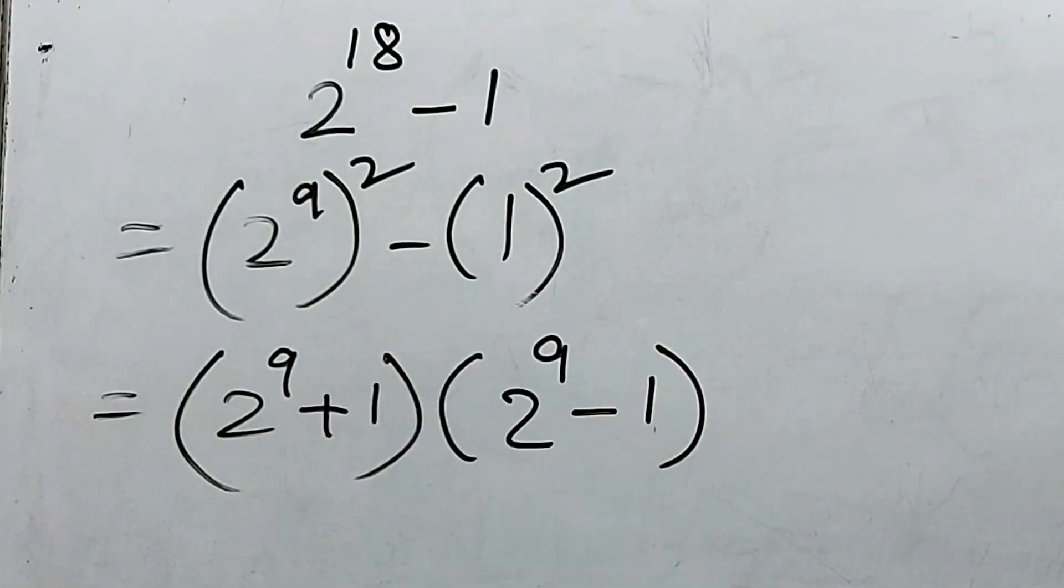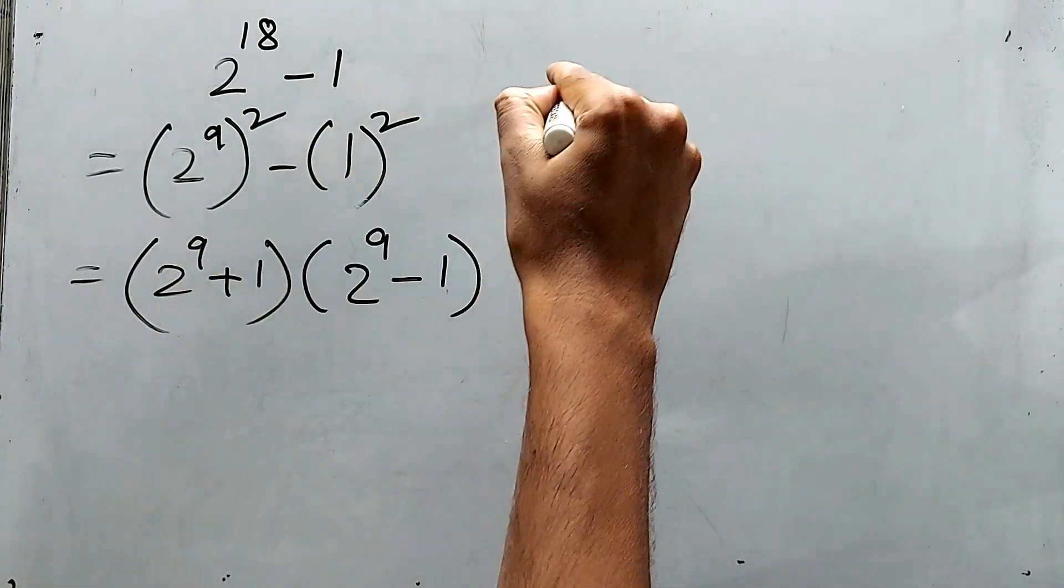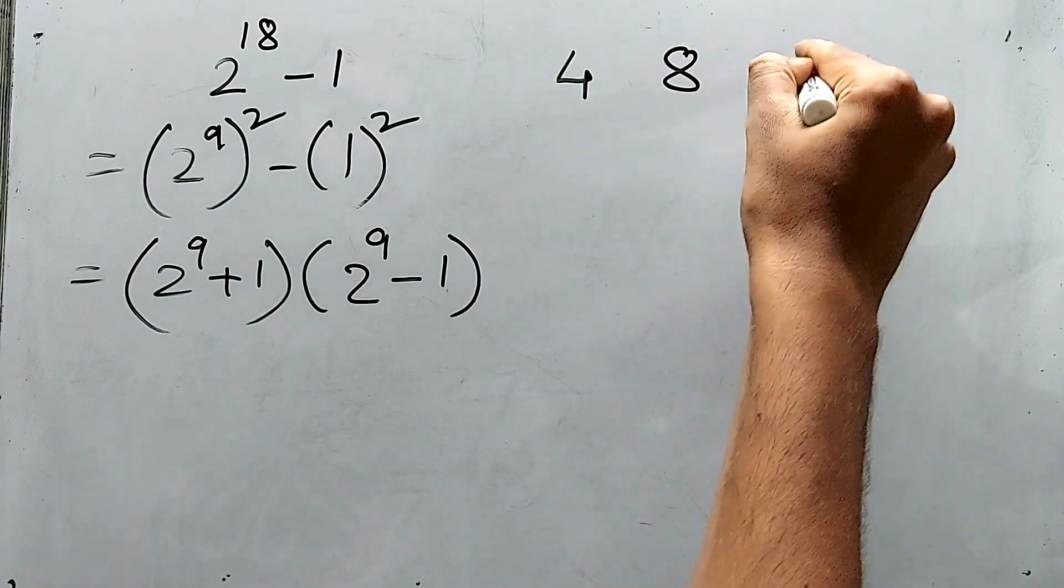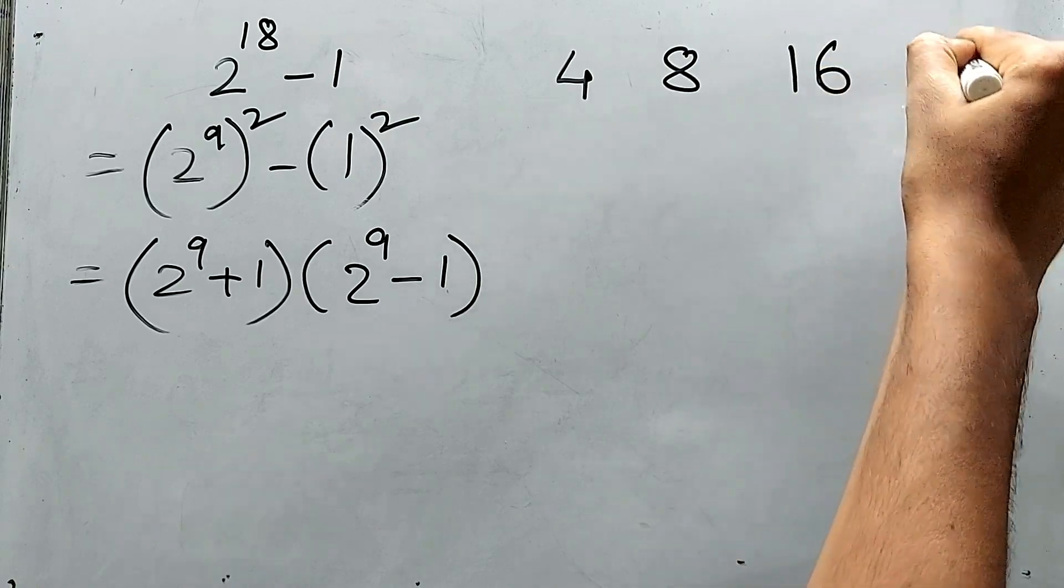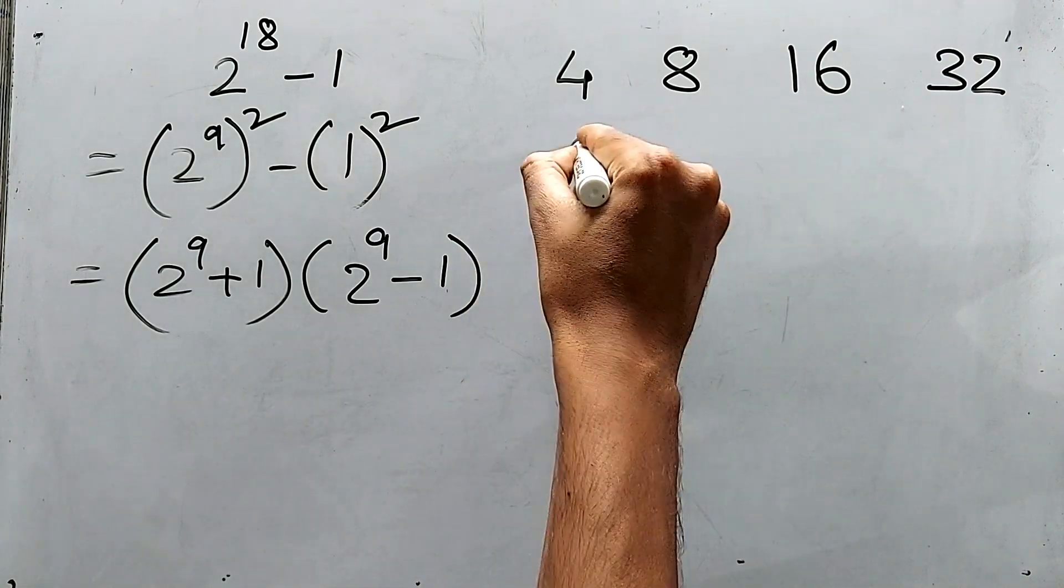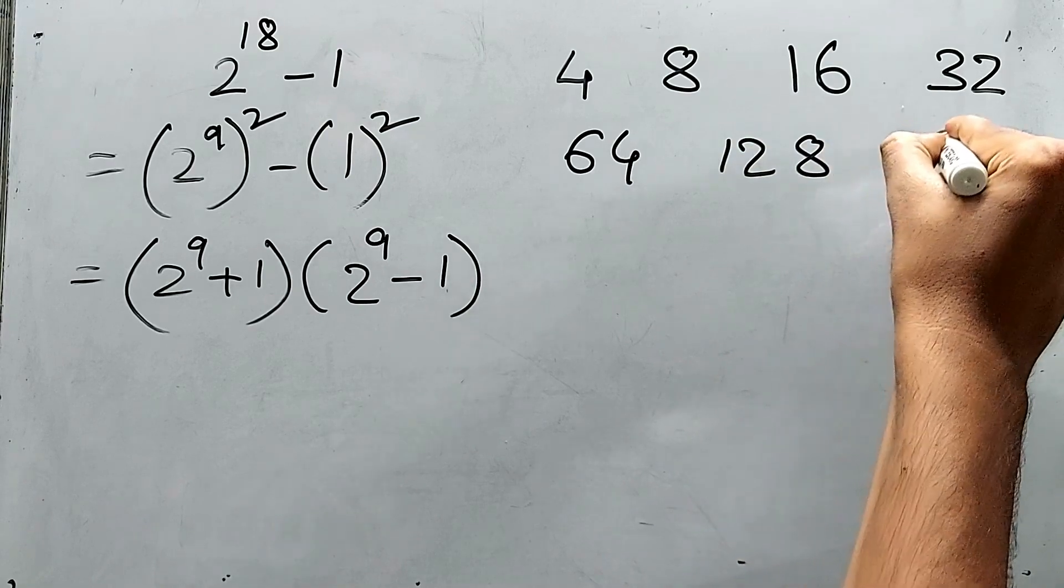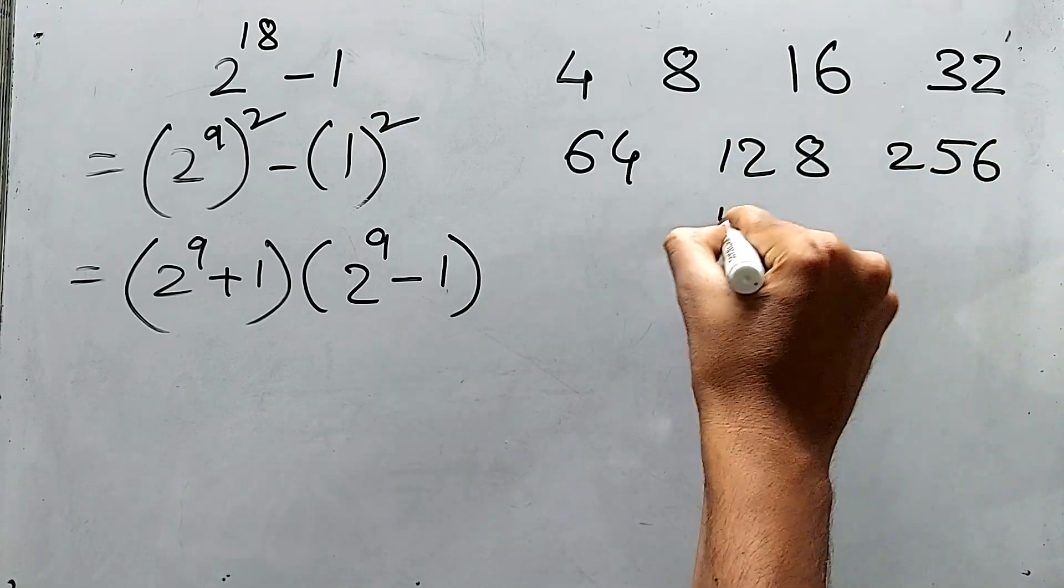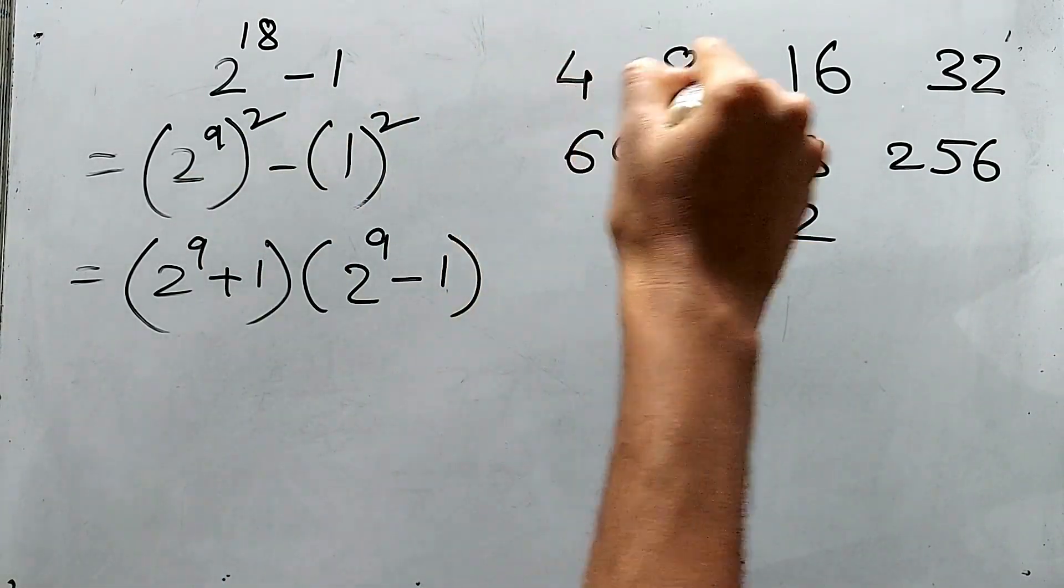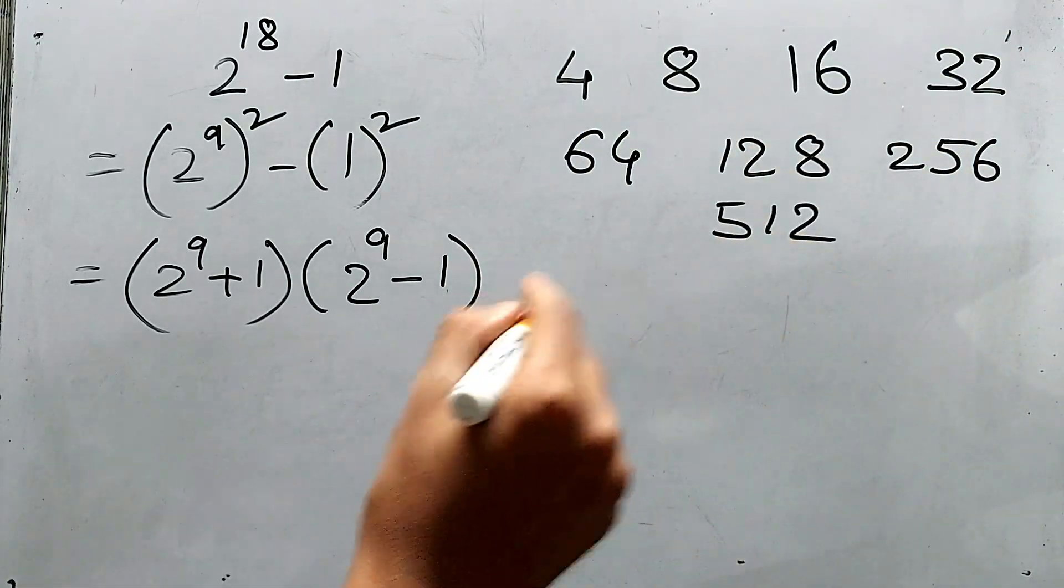Now what is the value of 2 to the power 9? We should know how to double the number: 2 square is 4, 8, 16, 32, then 64, 128, 256, 512. So 2 square cube to the power 4, 5, 6, 7, 8, 9. 512 is 2 to the power 9.